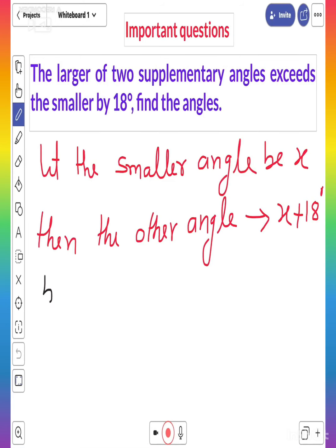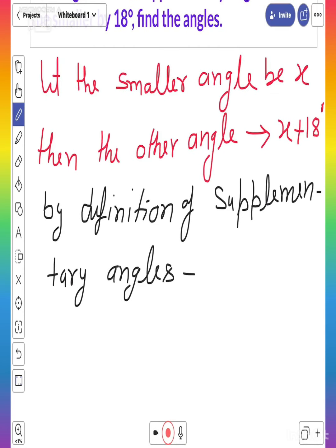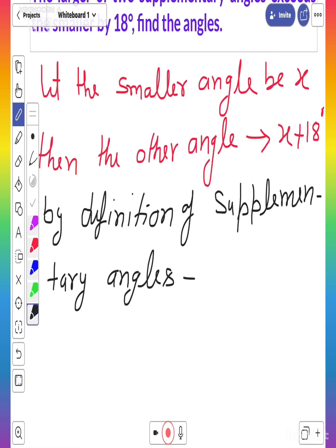Now by the definition of supplementary angles, you know that sum of angles will be 180 degrees. That is, x degrees plus (x plus 18) degrees equals 180 degrees.